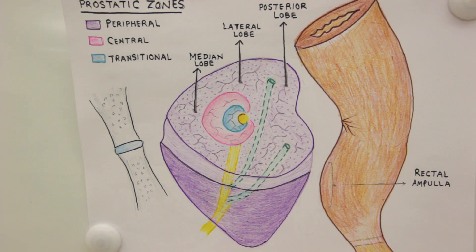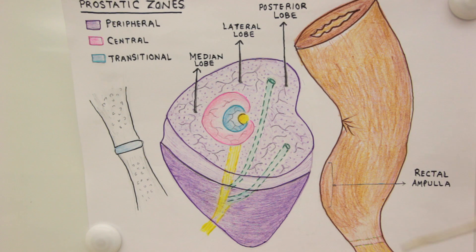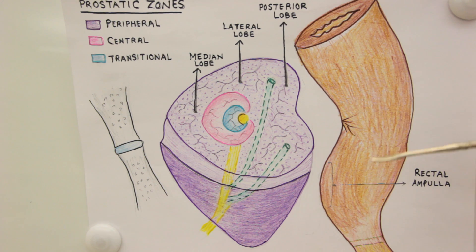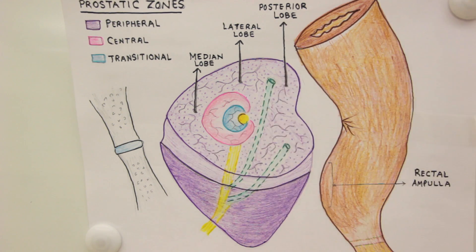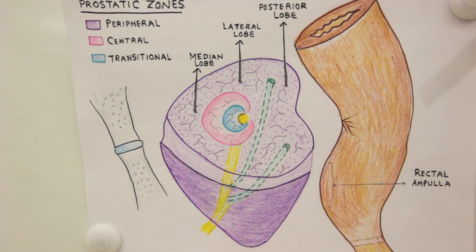In this illustration we'll be talking about the anatomical division of the prostate gland and also the structures traversing through the gland. The relationships are very obvious on this illustration, and we will be talking about the pattern of distribution of glands within the prostate.